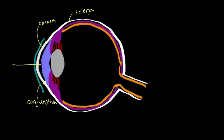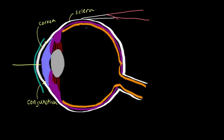The sclera is important because it also protects the eye — it's this thick fibrous tissue that surrounds the entire eye, the white part of the eye. It's also important because it serves as an attachment point for muscles. There are a bunch of muscles which allow you to move your eyeball around. This is the tendon of one of those muscles, and here's the muscle body itself. These muscles are attached to the eye at various places and allow you to move your eyeball without actually having to move your head.